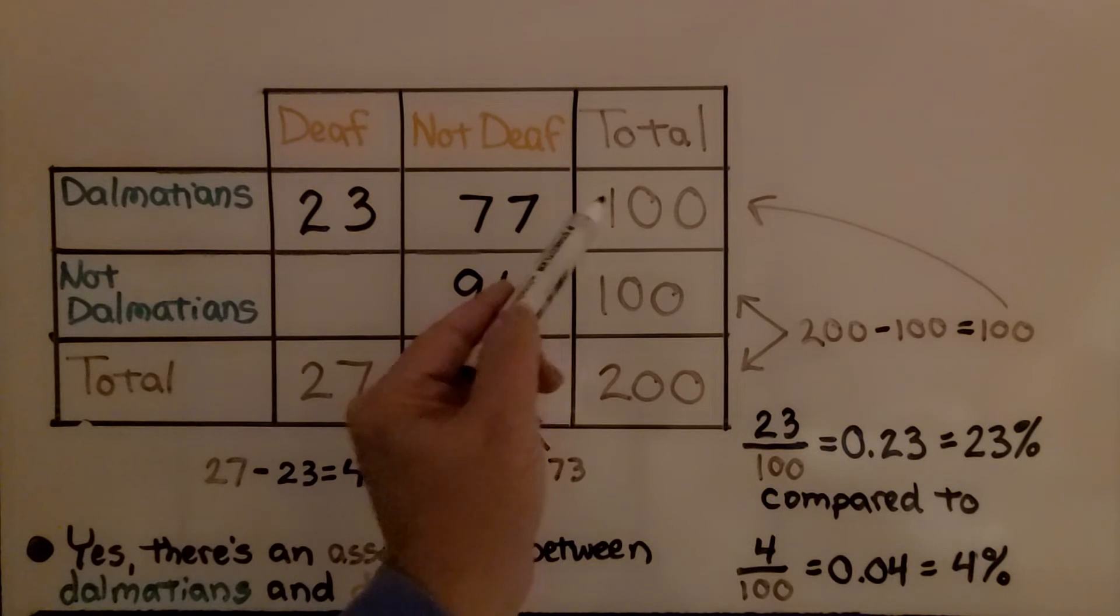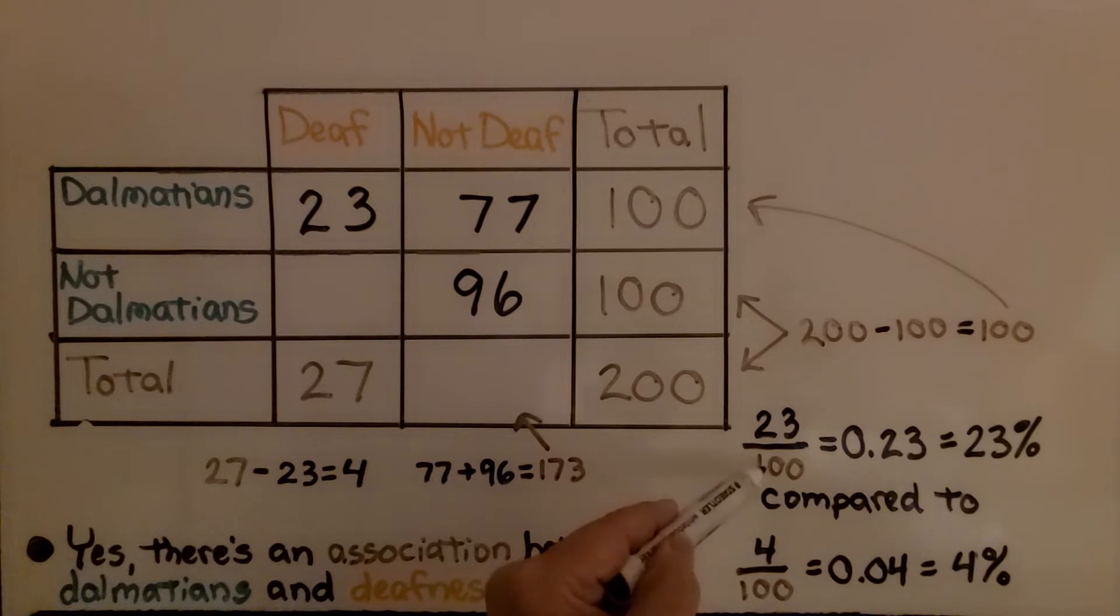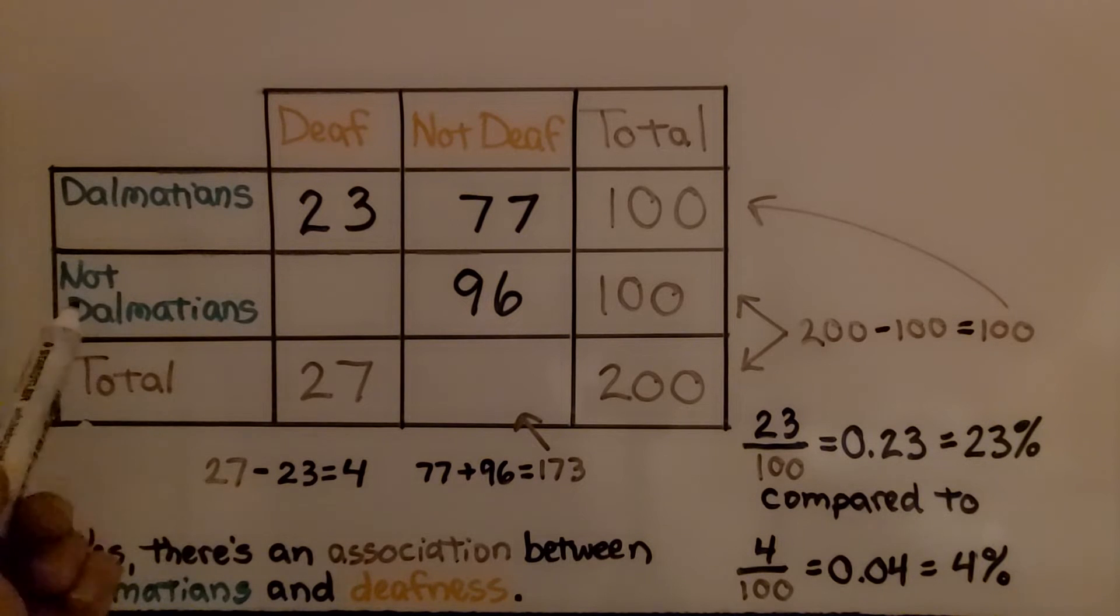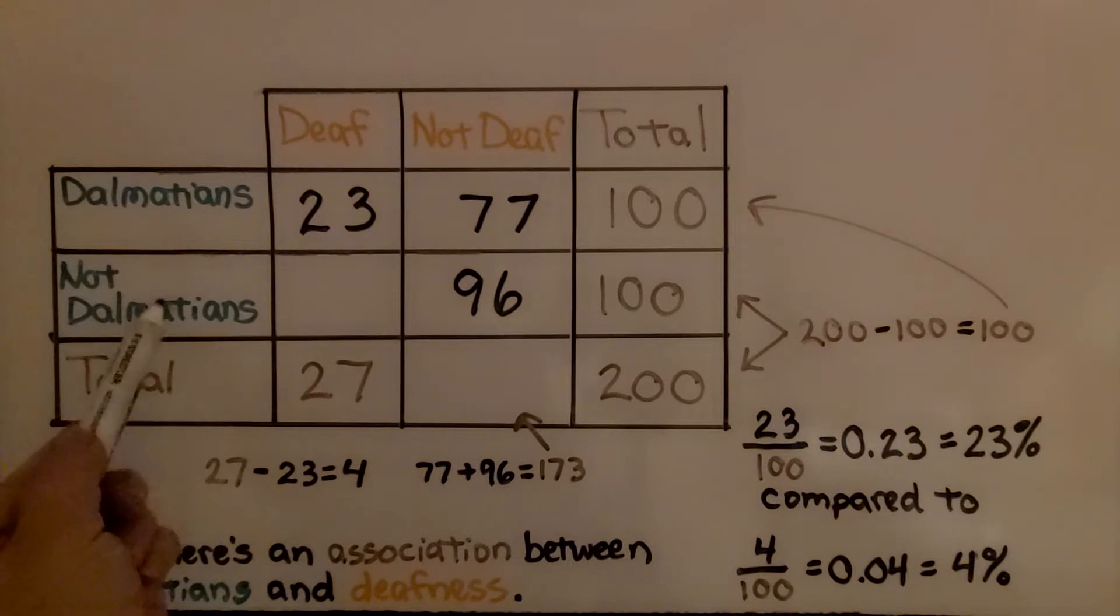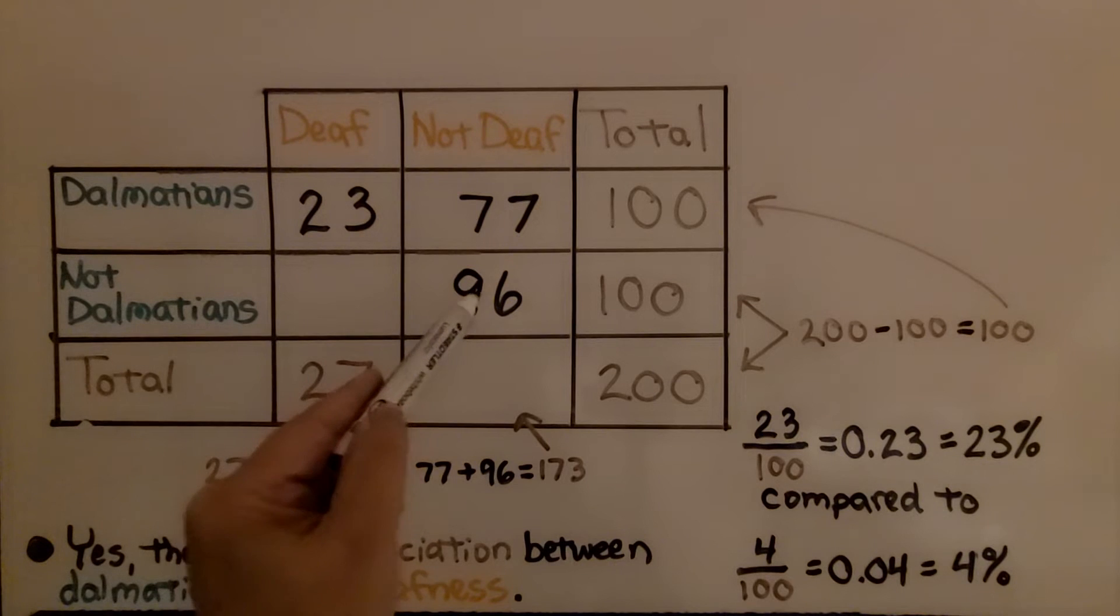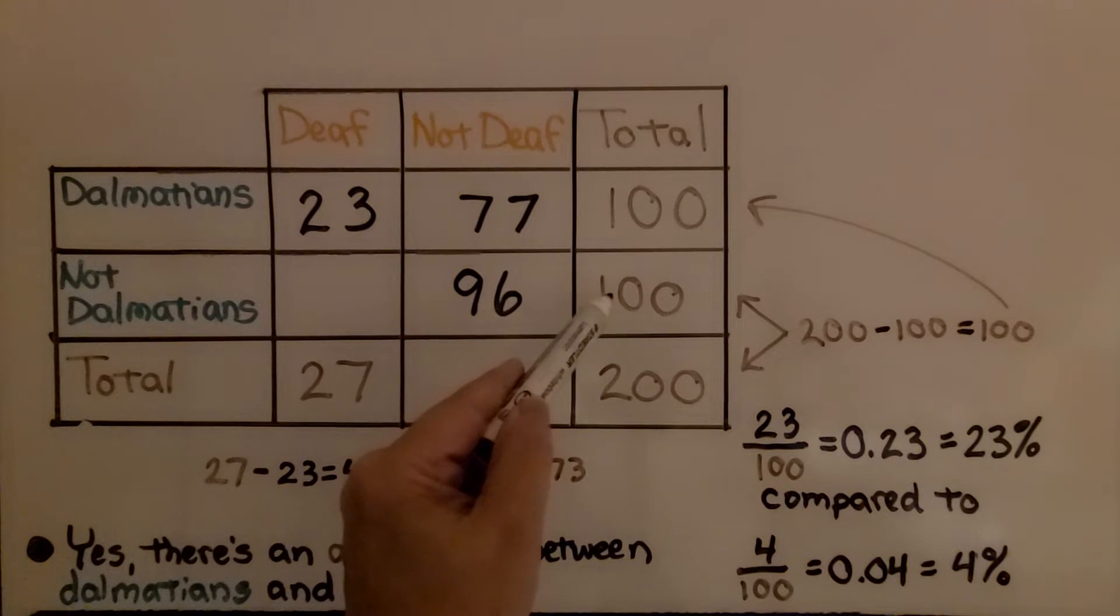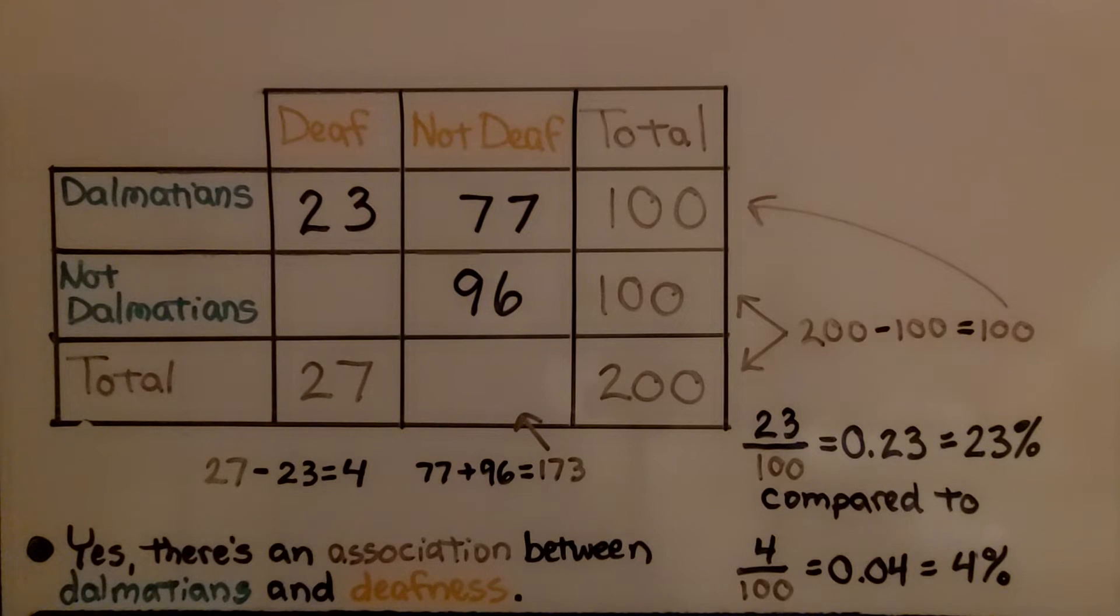Now, for the not Dalmatians, we know that 96 are not deaf out of 100. We can just subtract 100 minus 96, and we're going to get 4.